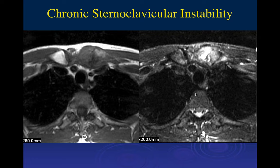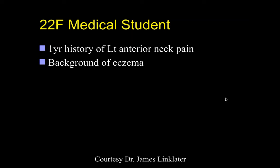Six months of bacterial infection would typically have been treated long before this. This patient had no symptoms suggesting infection — just chronic instability from the injury to the joint space. These joints are not easy to fix; they can be wired together.